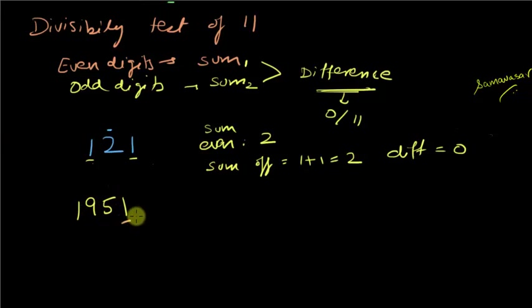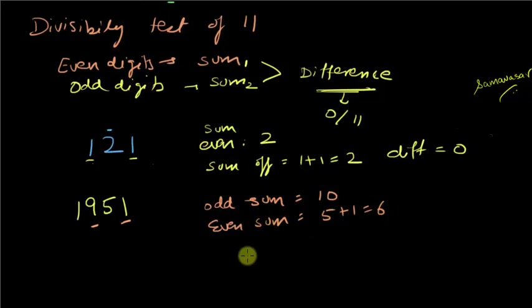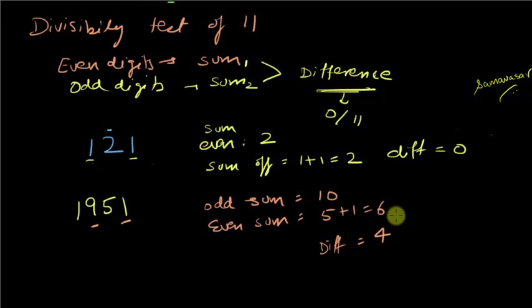Let me take another example: 1951. The odd-position digits sum is 5 + 1 = 6. Taking the difference of the two sums gives 4, which means this number is not divisible by 11.